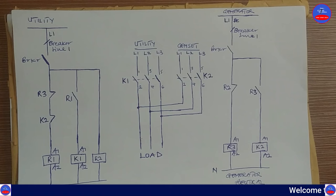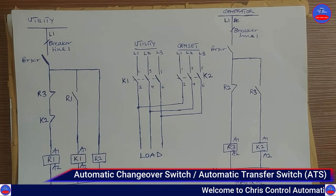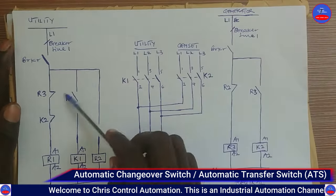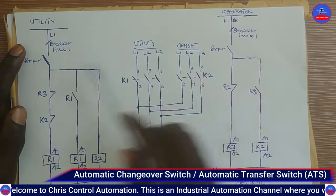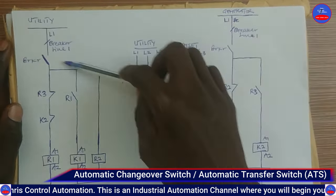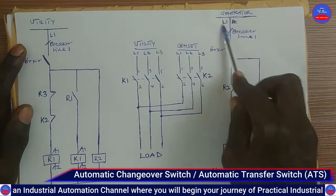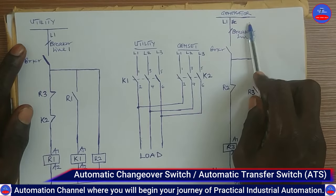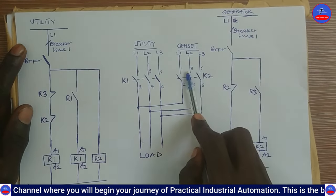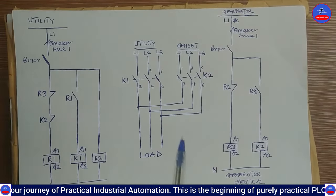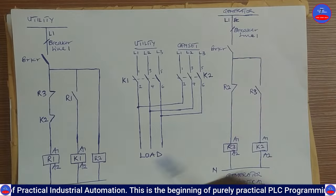Hello engineers, welcome to Quiz Control Automation. Today we are going to look at automatic changeover switch, also known as automatic transfer switch. I have with me these control diagrams — this is the control circuit for the utility power, this is the control circuit for the generator power, these are the power lines for utility and generator, and this is the load. So what is the meaning of automatic changeover switch?